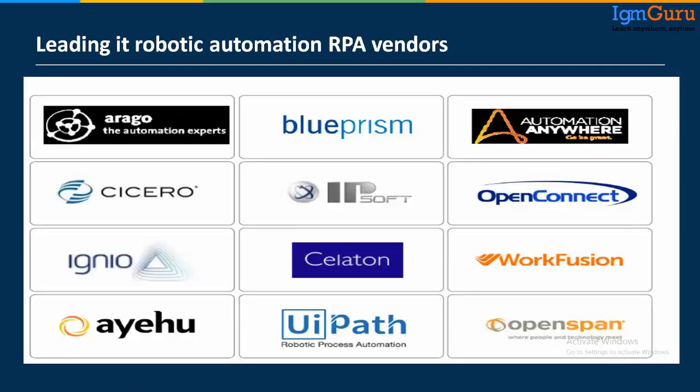These are all the RPA tools available in the market. UiPath is the leading and top tool, followed by Blue Prism and Automation Anywhere — these three currently dominate the market. Apart from these, there is WorkFusion, OpenSpan, IPsoft, and many others. You just need to learn one tool, starting with simple basic examples, then progressing to complex and advanced scenarios.